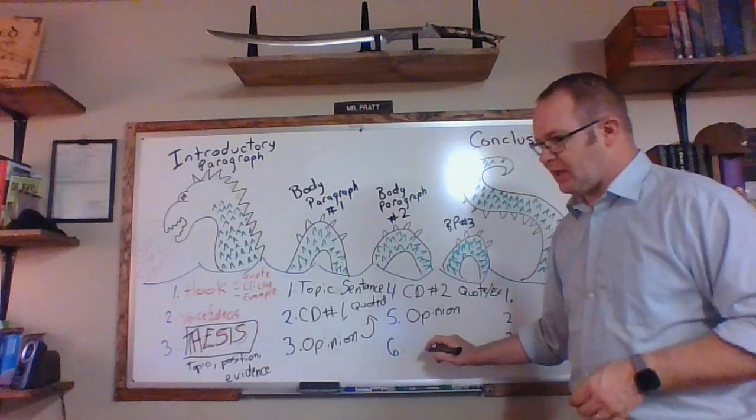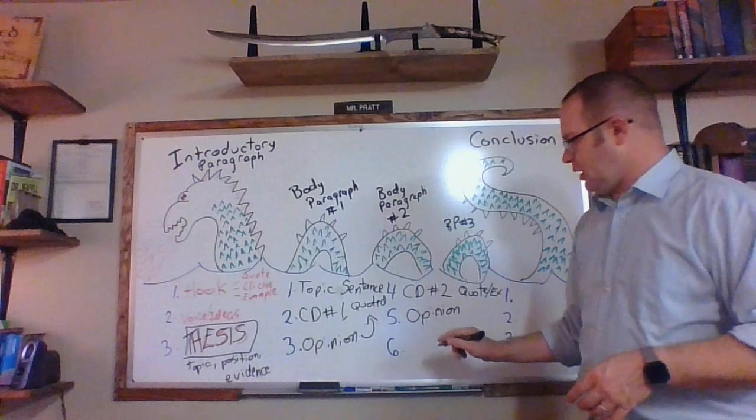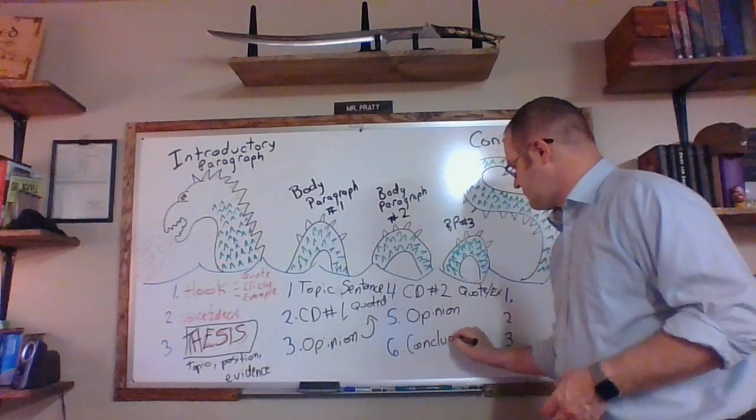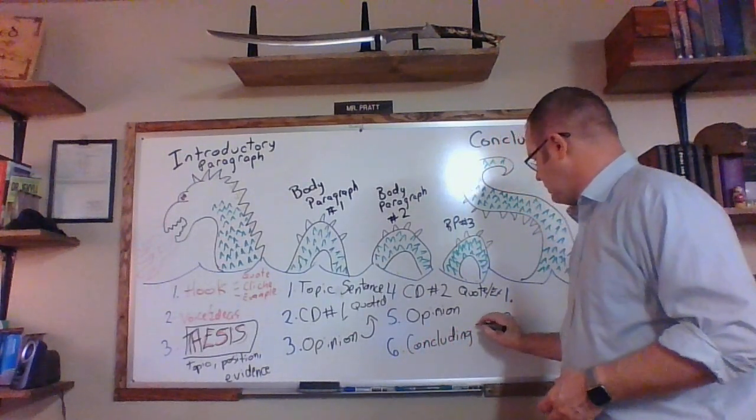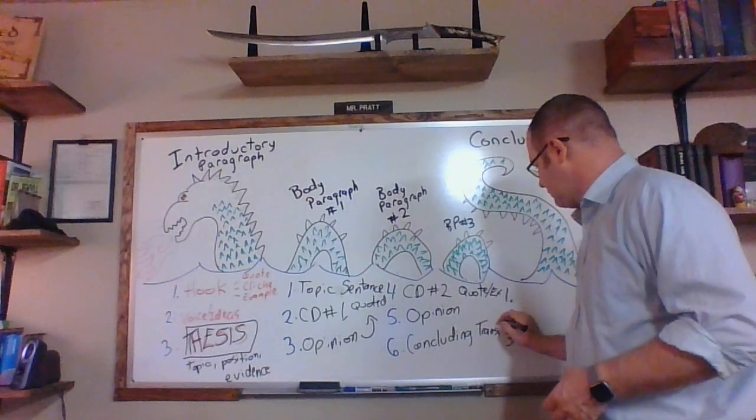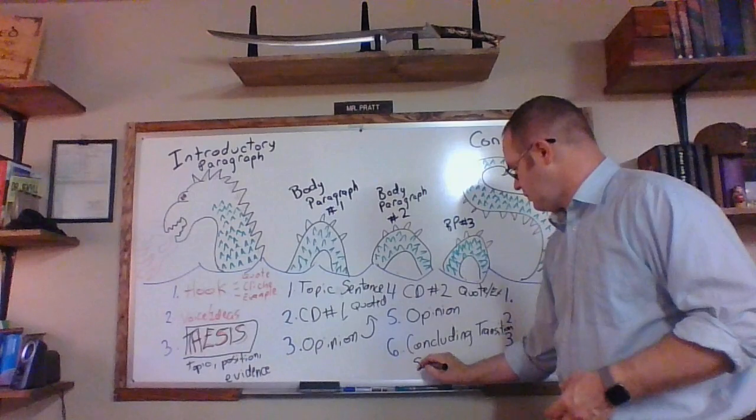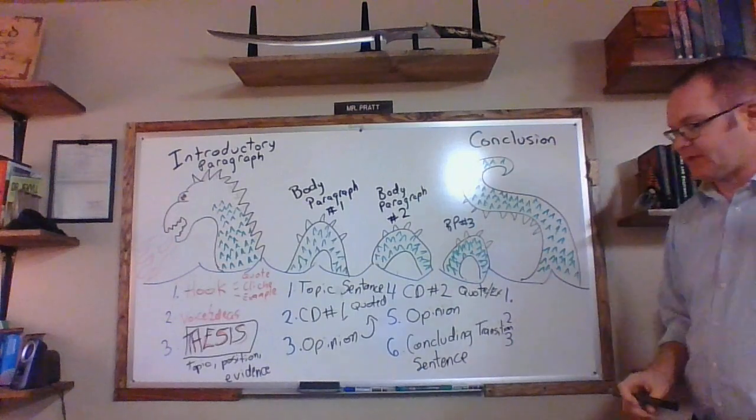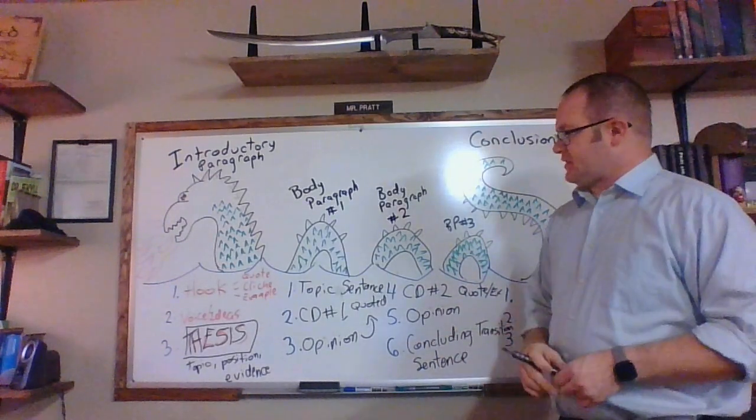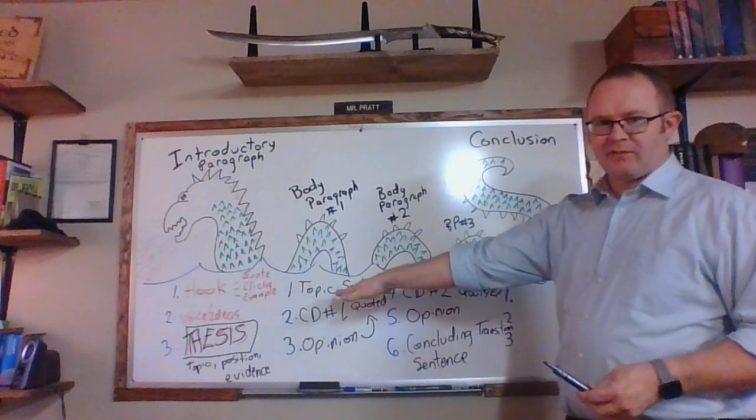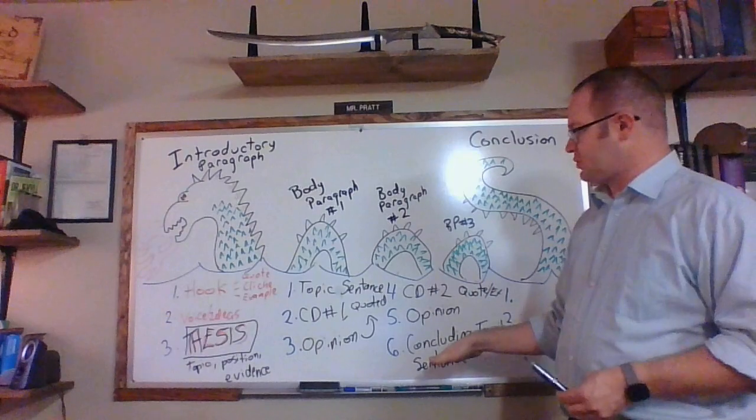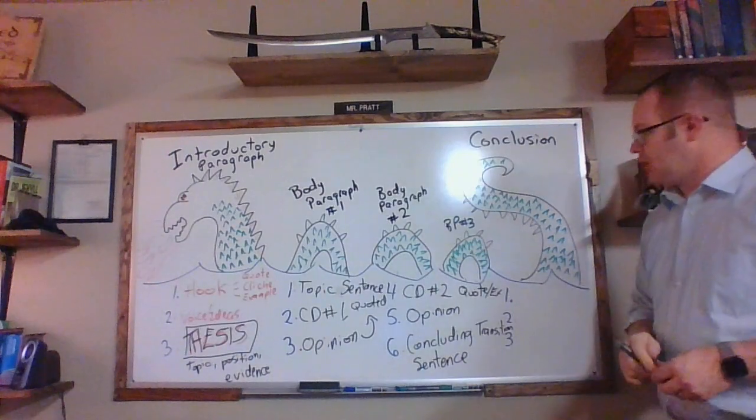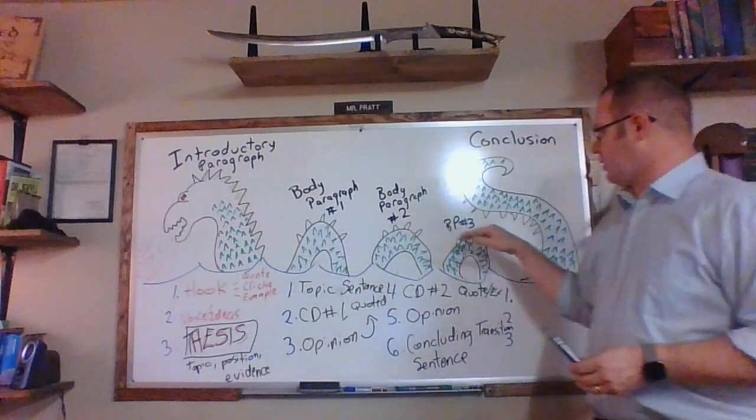To finish up, have a kind of concluding sentence right here that kind of transitions you into the next body paragraph. So I'm going to say concluding transitional sentence. Notice here I'm spelling sentence two different ways in two different sentences. I'm so sorry. This is a concluding transition sentence. You wrap up the topic of whatever paragraph you're in and you begin to introduce the next little bit to your second body paragraph or your third body paragraph. You're going to follow this formula for your first three paragraphs.